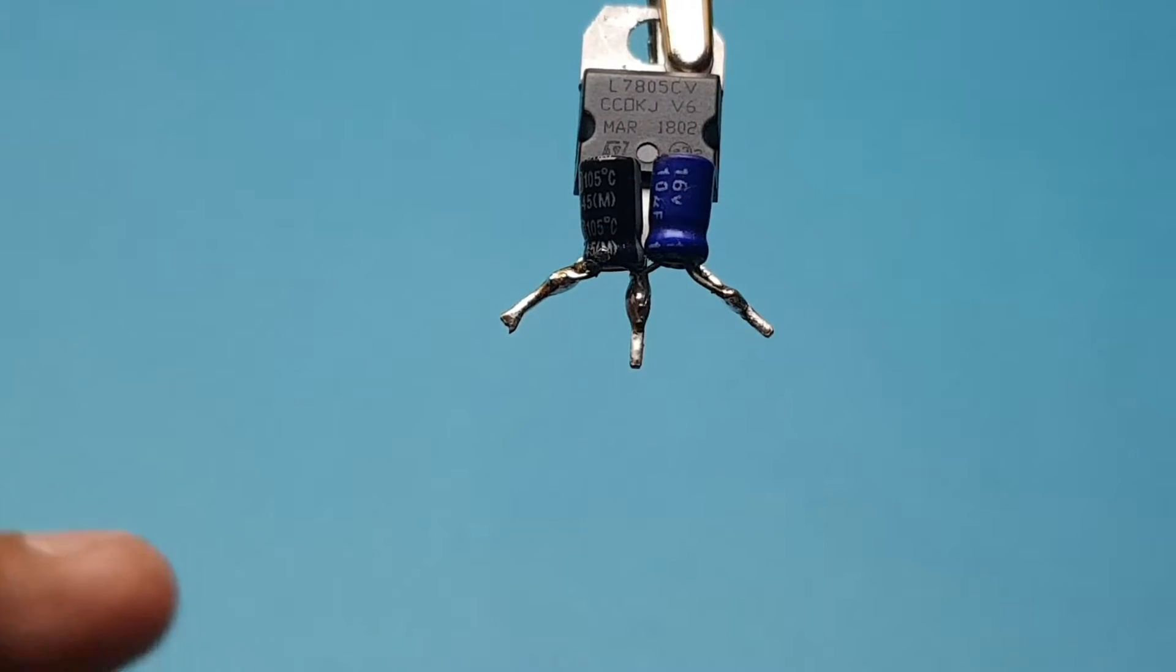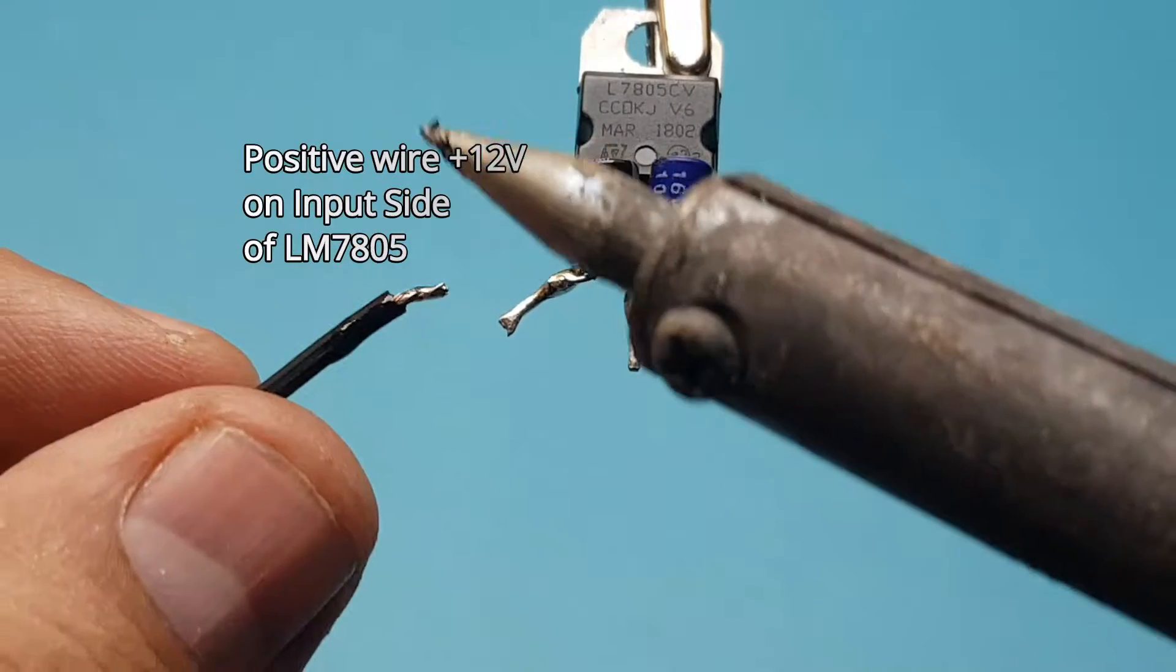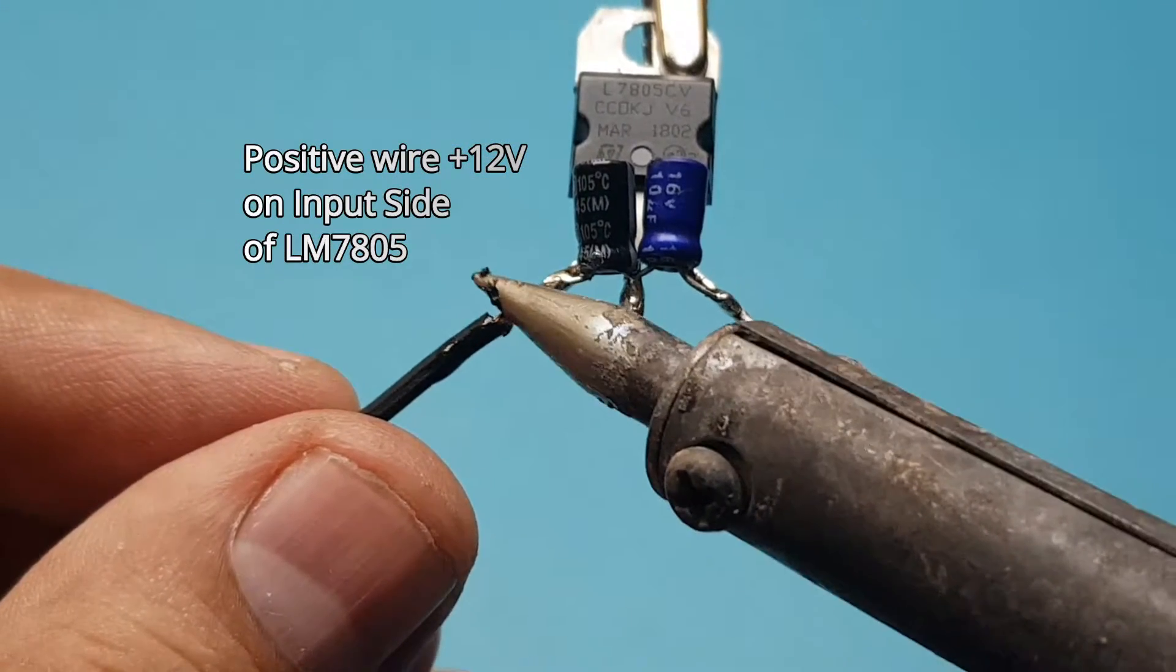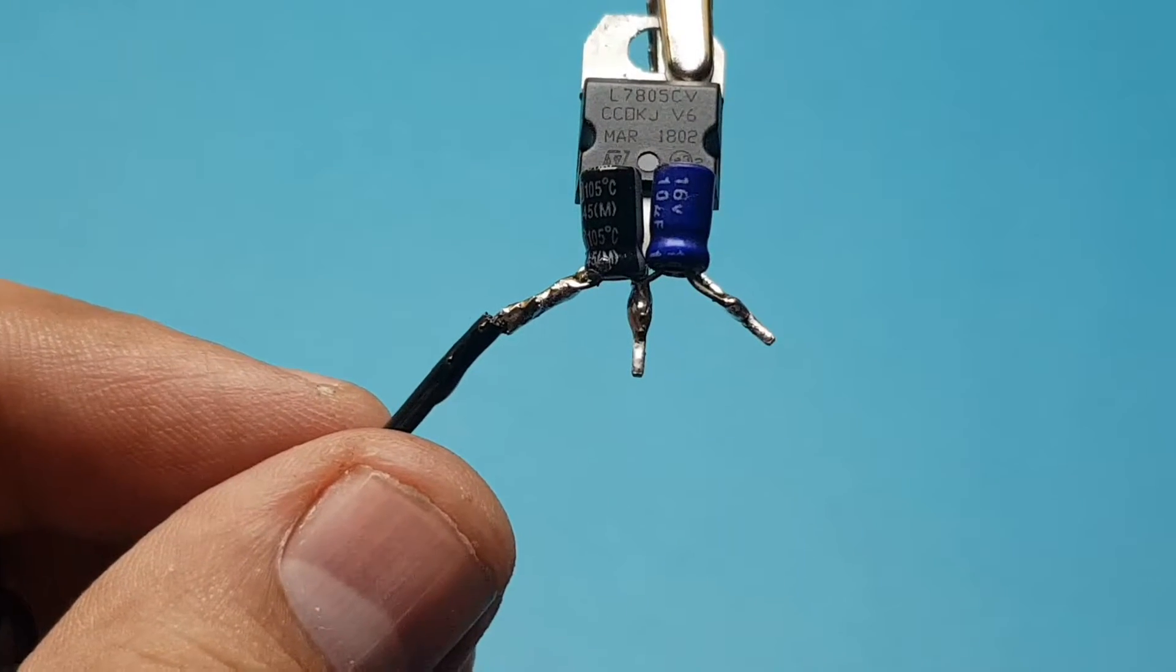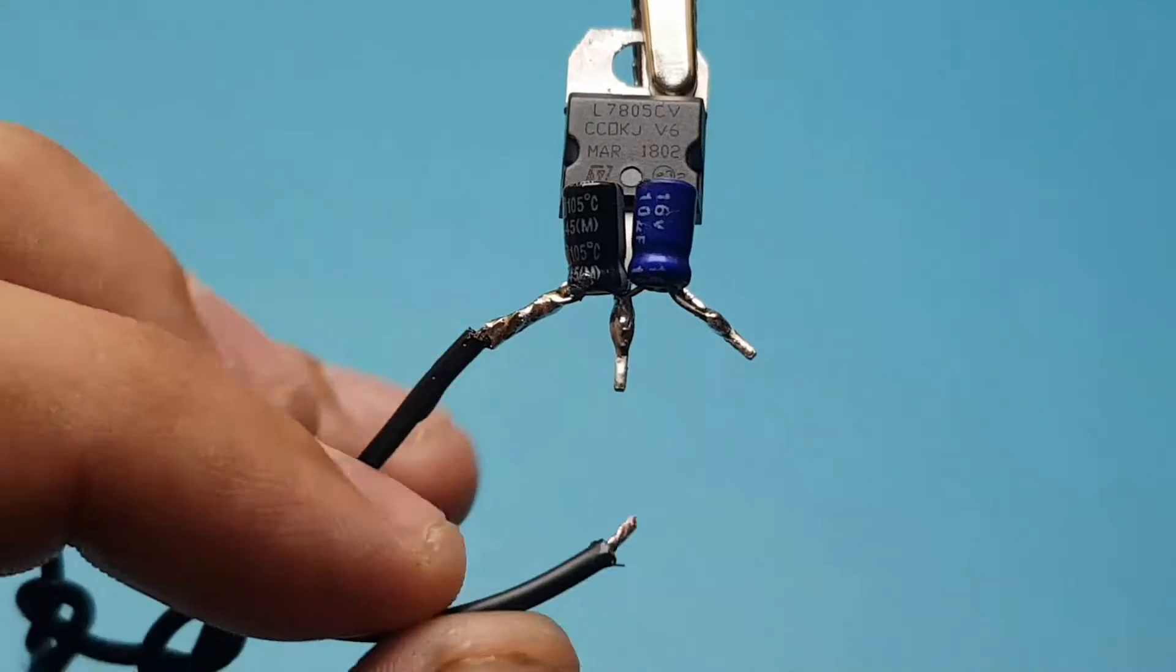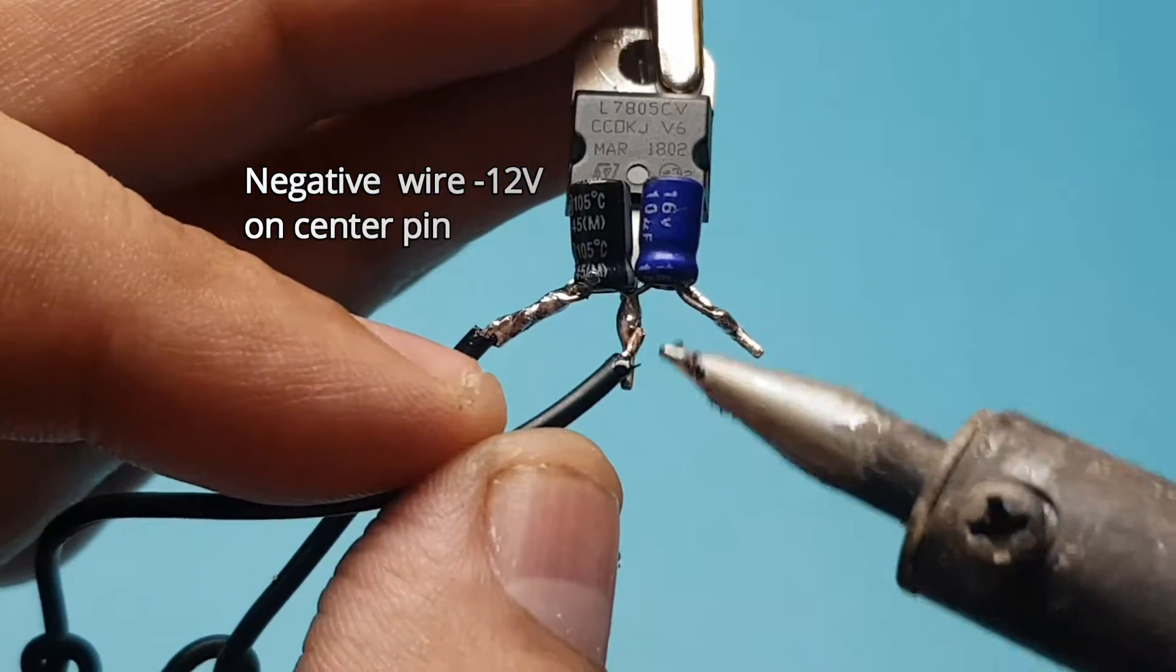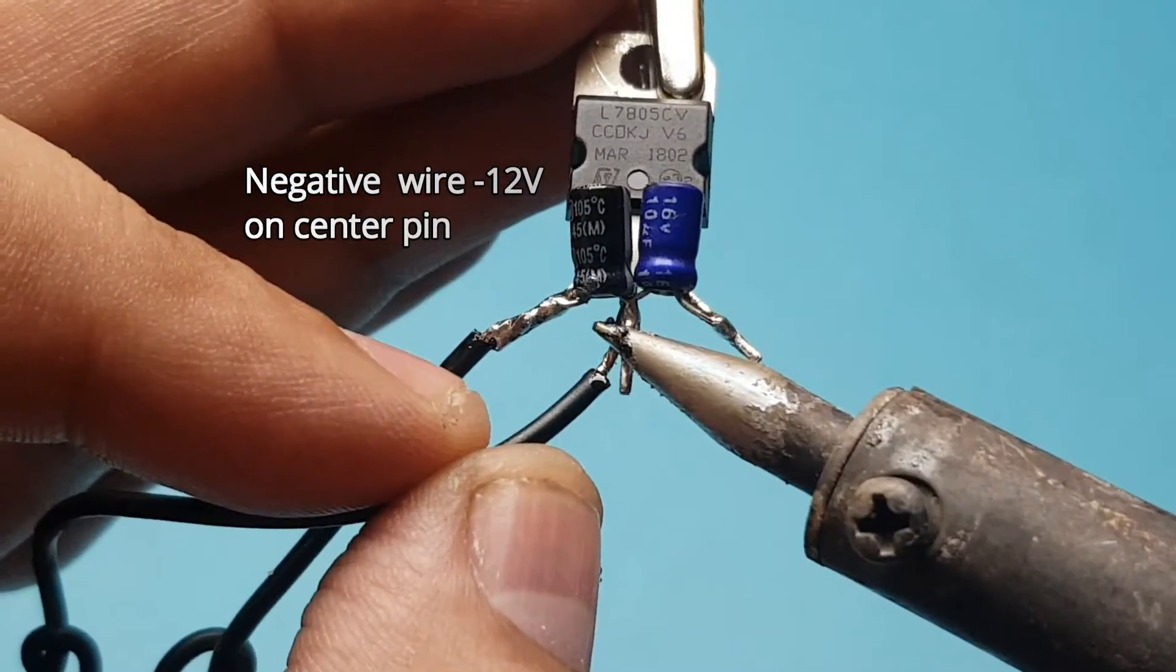I will now solder the positive wire of my power adapter to the left pin of LM7805 and the negative wire to the negative or center pin of the IC.